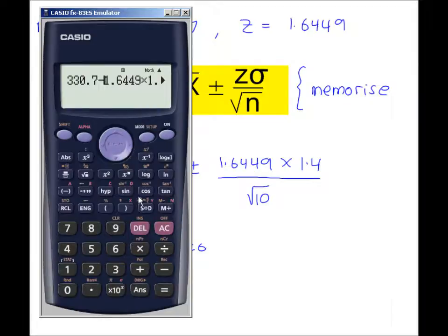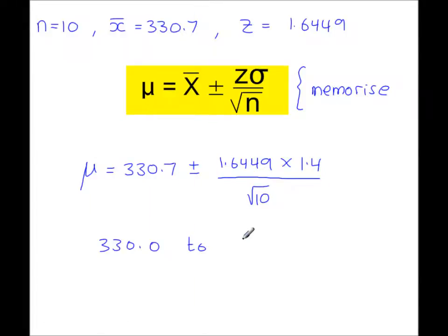And then changing the minus to a plus, 331.4 millilitres. Again, to four significant figures. So there you have it. The lower limit and the upper limit of the confidence interval.